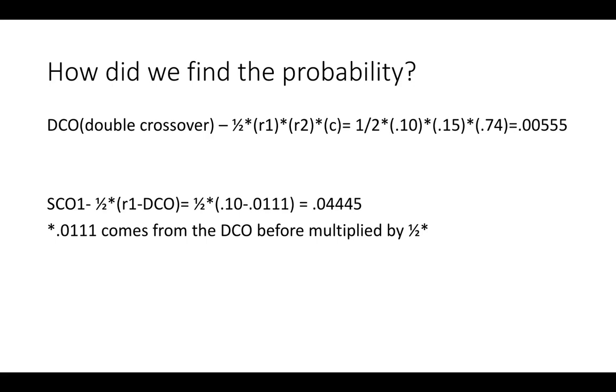Our r1 is our first range, which is going to be our 10 centimorgans, which will be 0.10, times our 15 centimorgans, which is 0.15, times our coefficient of coincidence, which is 0.74, to get a total of 0.00555 for our double crossover probability.